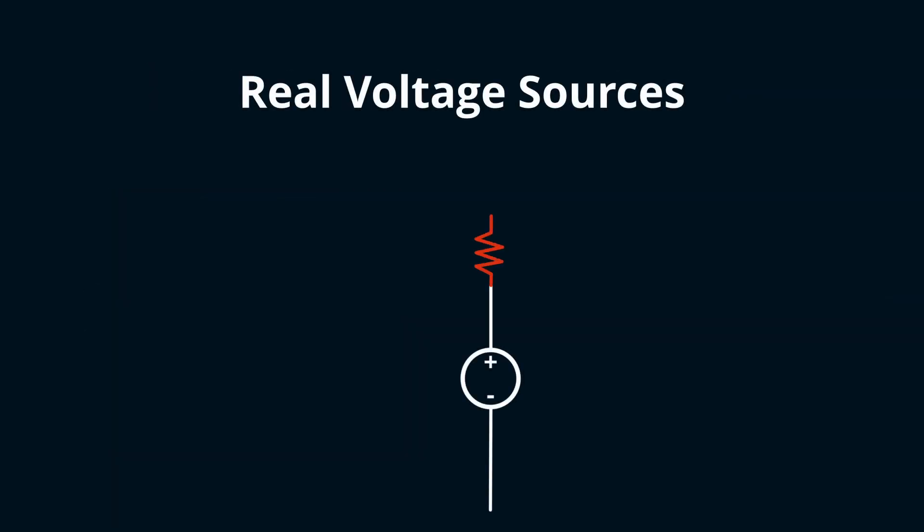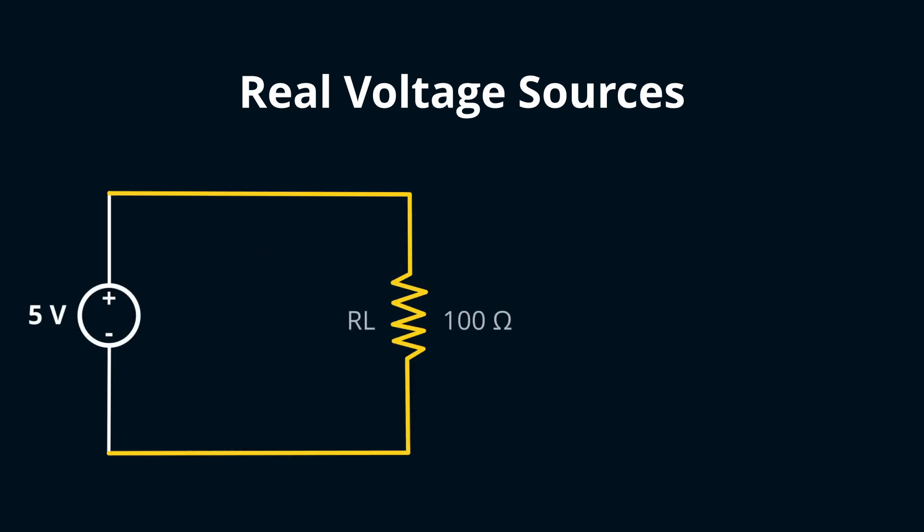Let's delve into the real question: how does this minuscule internal resistance change things? Imagine an ideal voltage source of 5 volts connected to a 100 ohm resistor. Naturally, the voltage across the resistor remains a steady 5 volts.